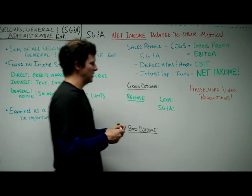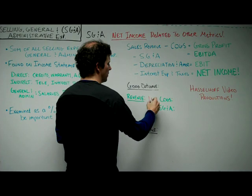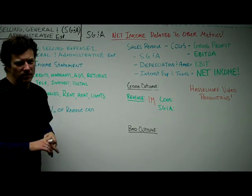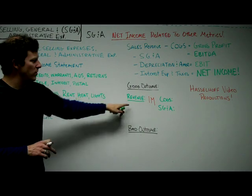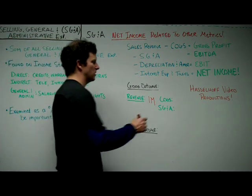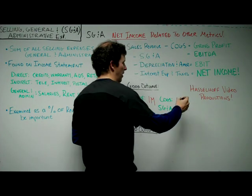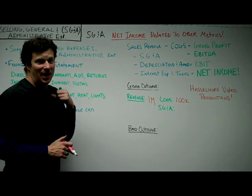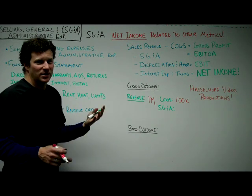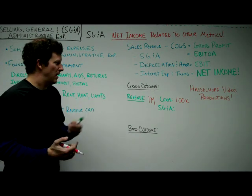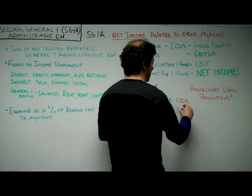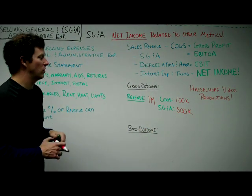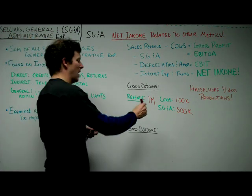If we take that gross profit — let's say Hasselhoff Video Productions does a million dollars in revenue by selling compilations of his old German music videos on DVD — his cost of goods sold is only $100K to make and compile the DVDs. However, his SG&A expenses are pretty high because he's got to hire sales reps to go out and sell it to retailers. He's also going to spend a lot on advertising in trade and retail publications. So let's say he spends $500,000 on SG&A.